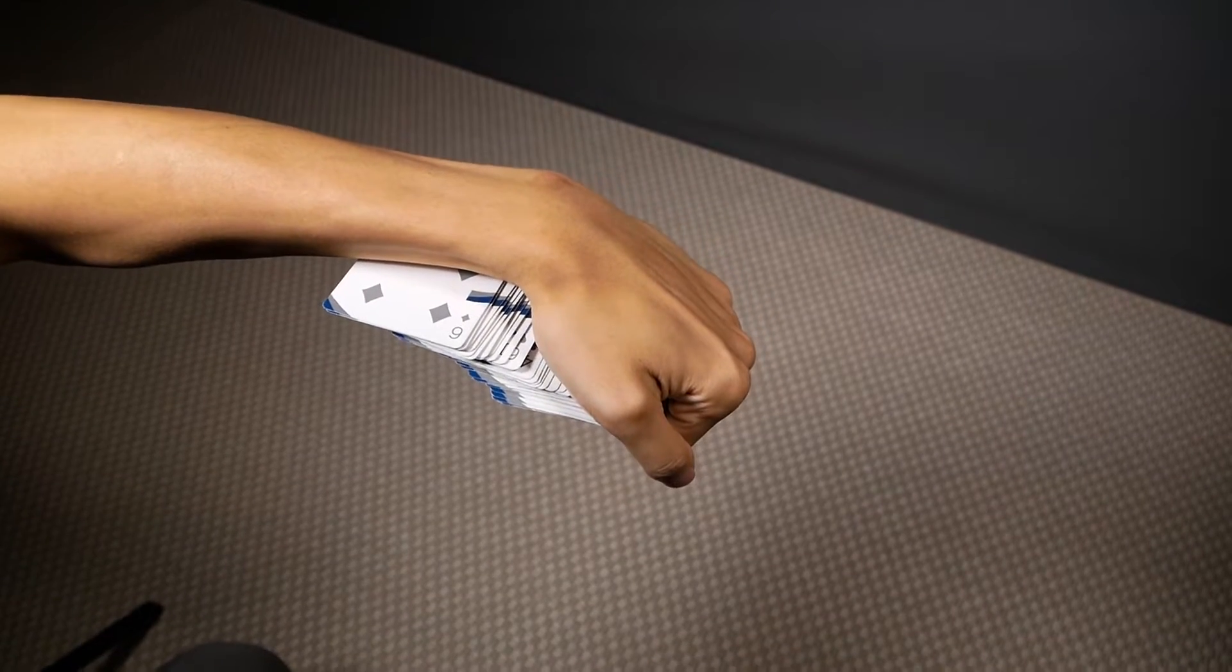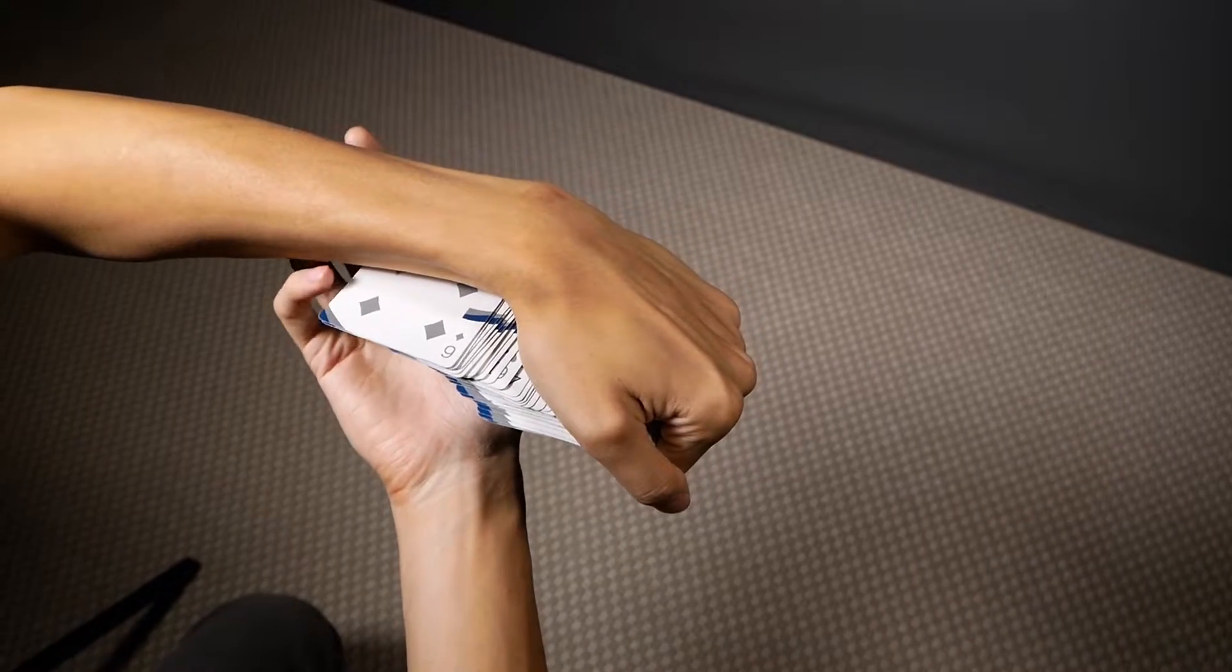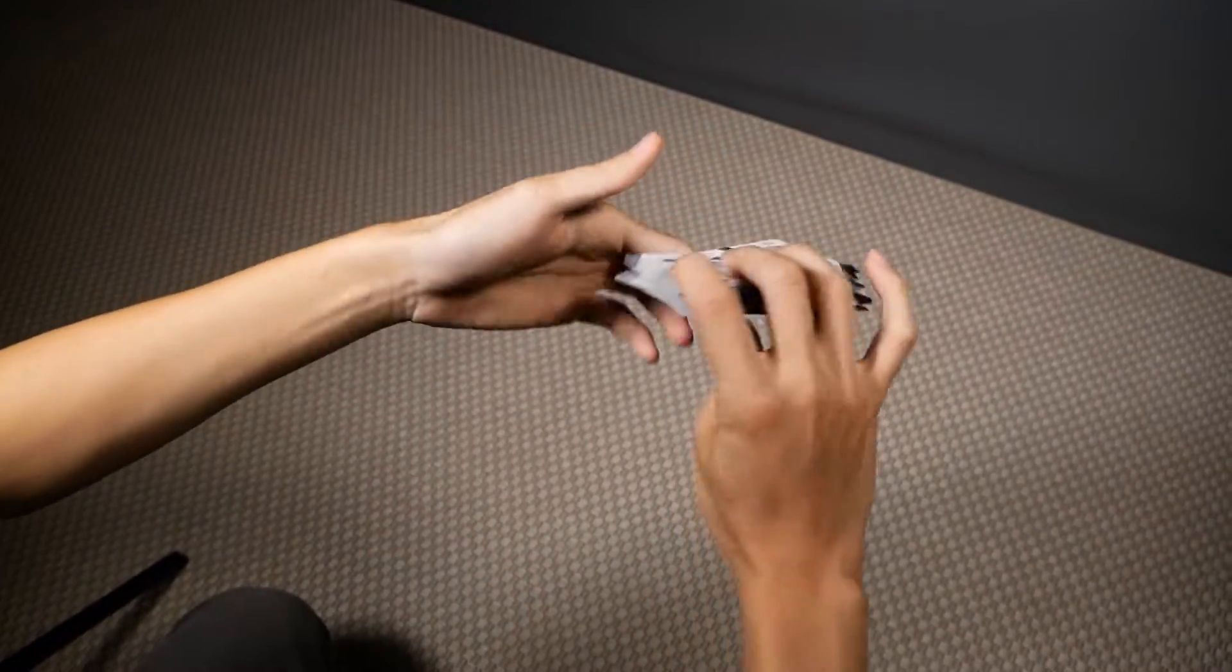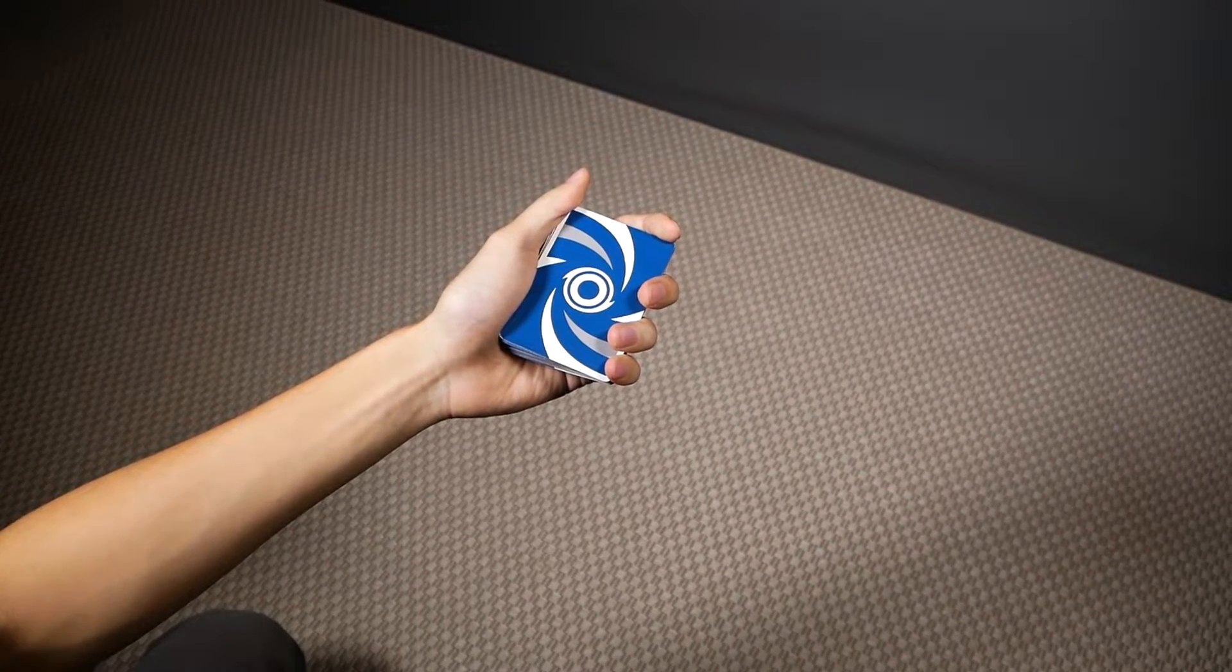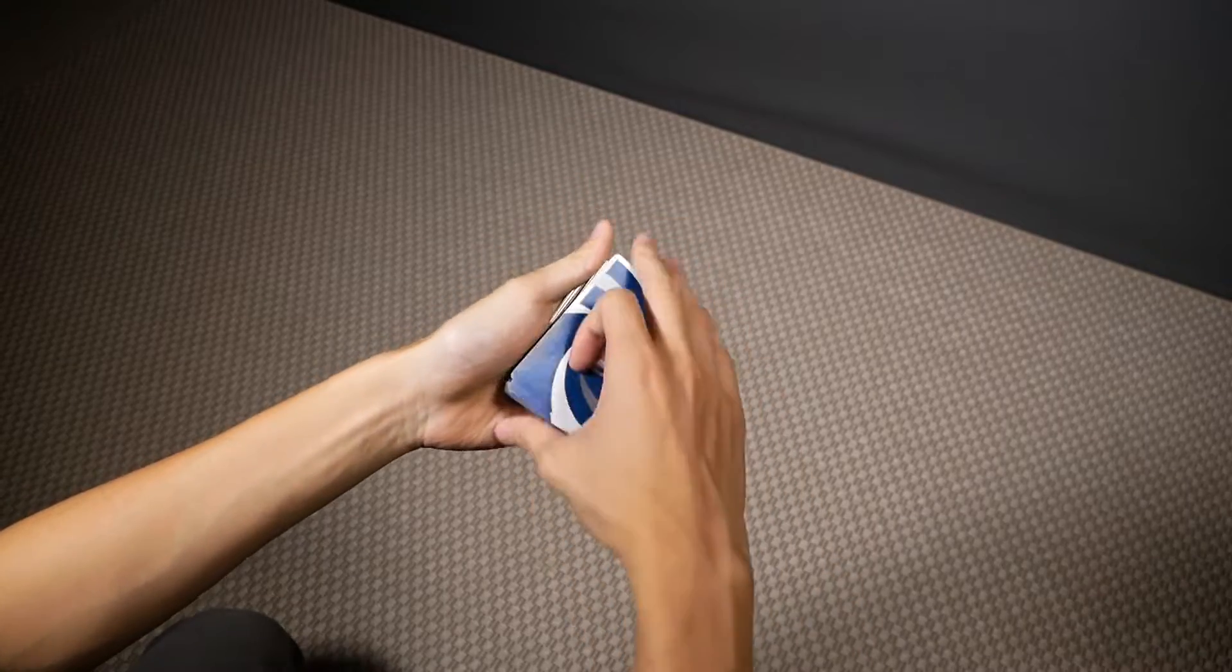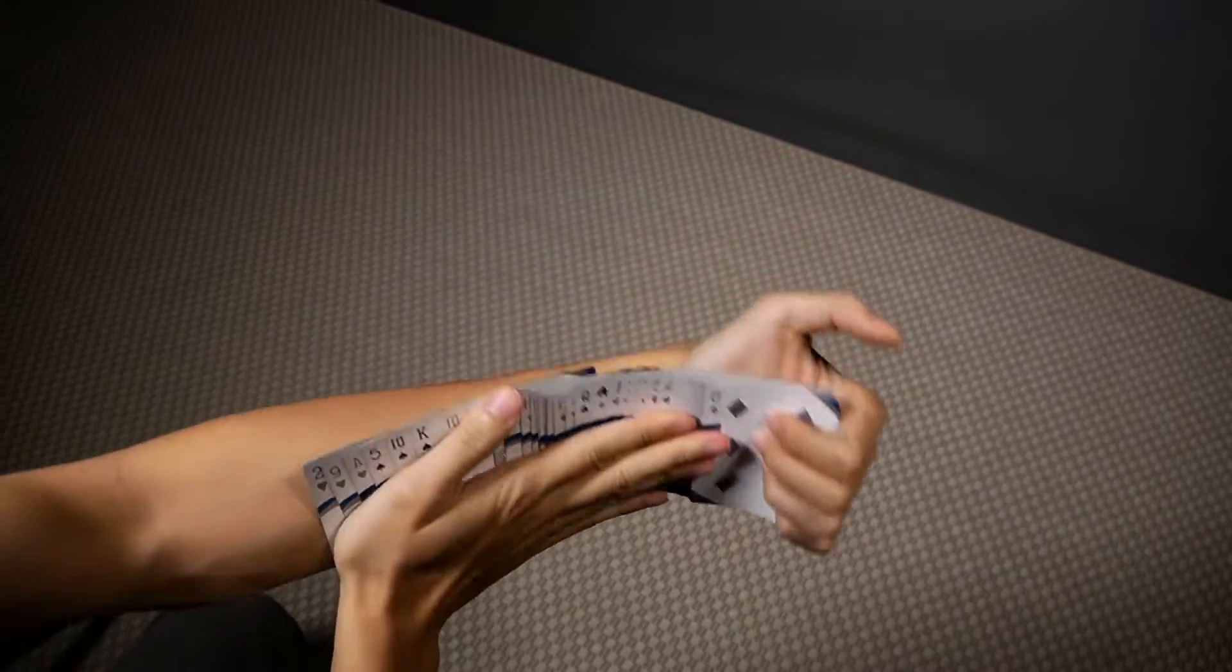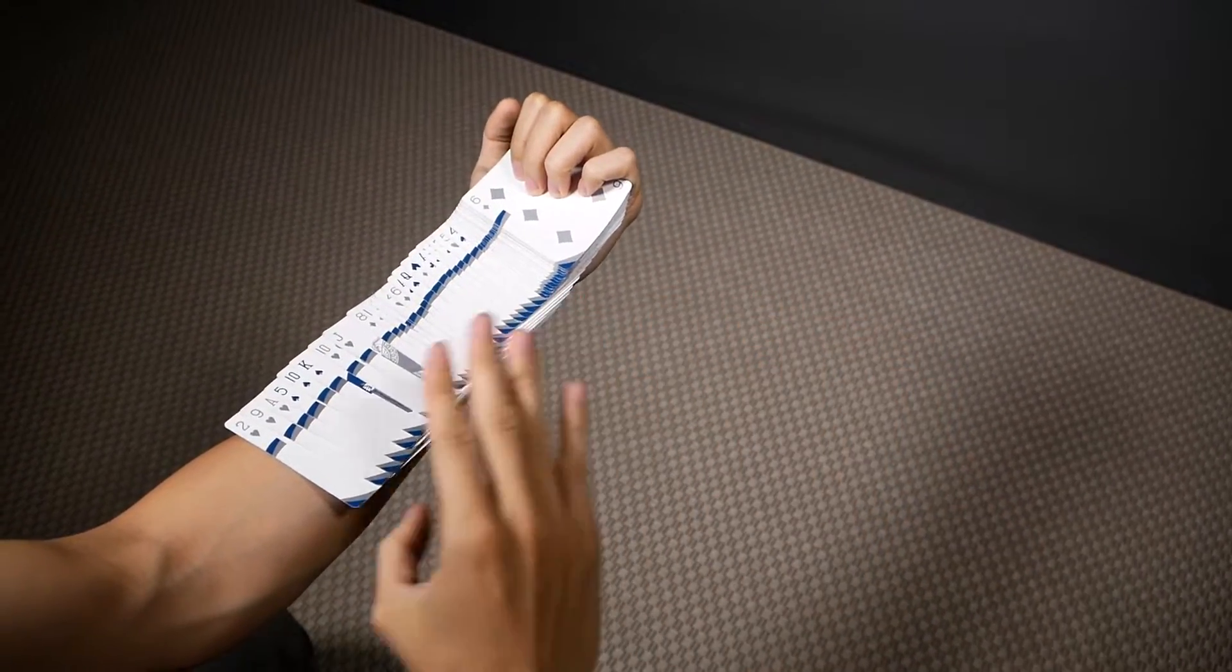You'll be grabbing the spread like so, and to close, you want to simply have your right hand come over and square the spread by moving to the right, and then you just flip the deck and you're back in dealer's grip. An alternative closer would be to first turn your hand back around and then close with your right hand.